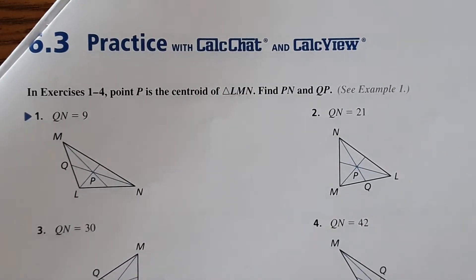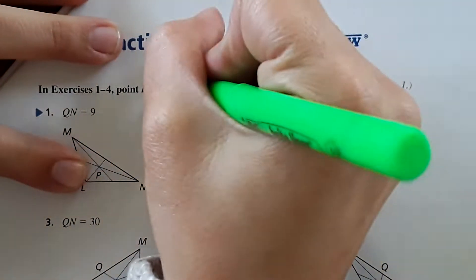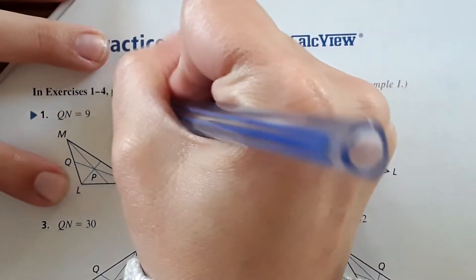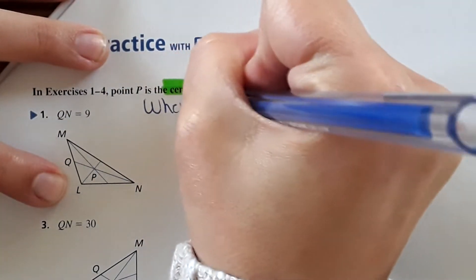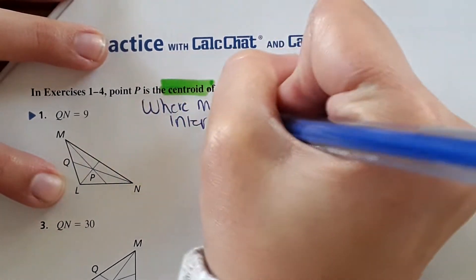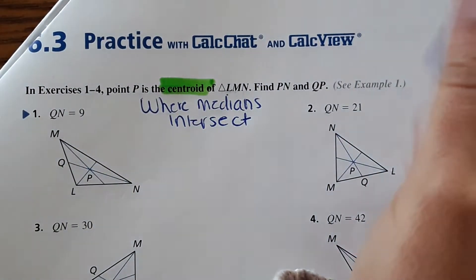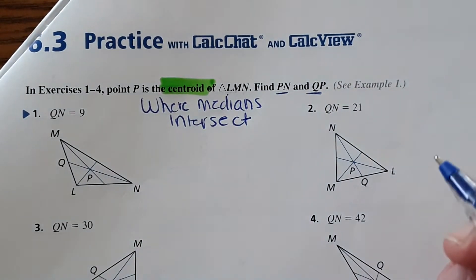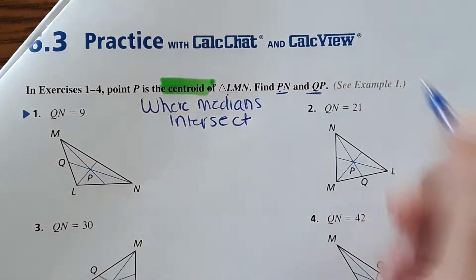Okay, so 6.3 practice. It says point P is a centroid. Remember, the centroid is where the medians intersect. So we'll make a note: centroid is where the medians intersect. It says find PN and QP. That helps you remember.